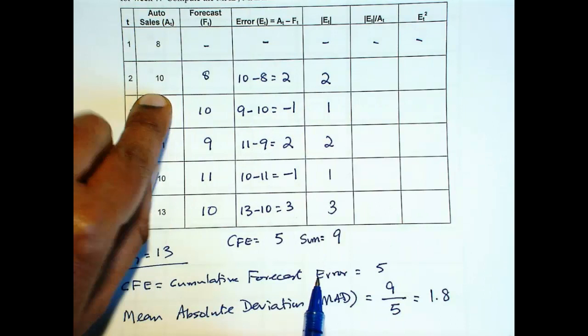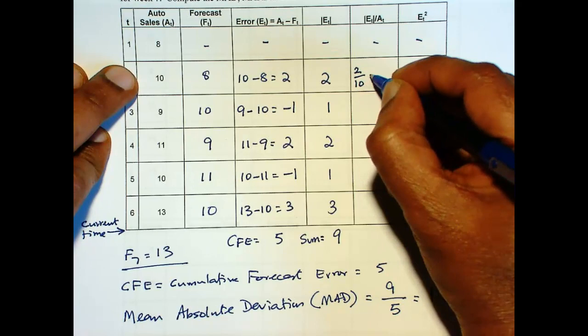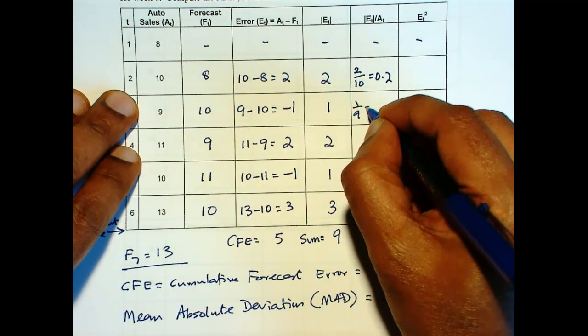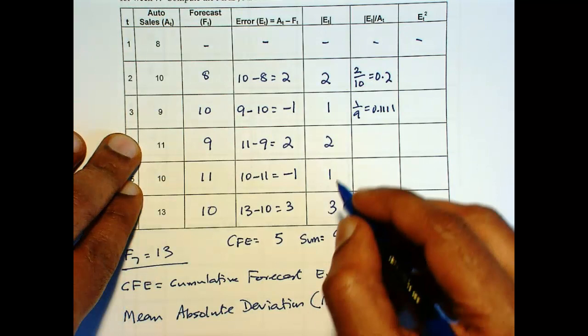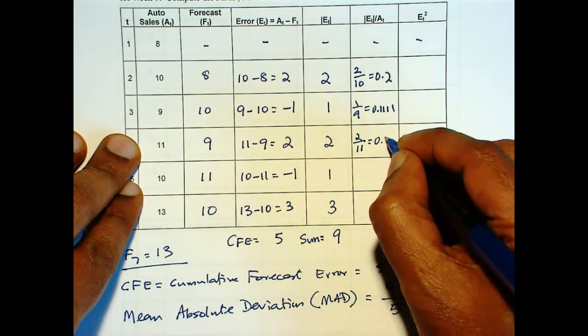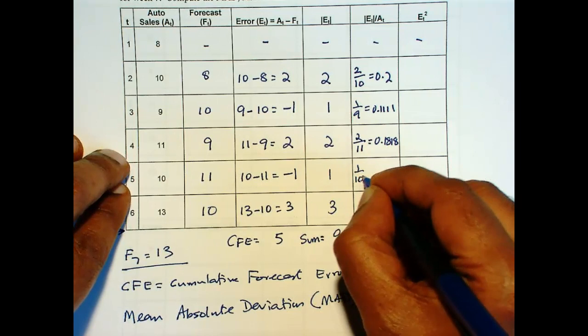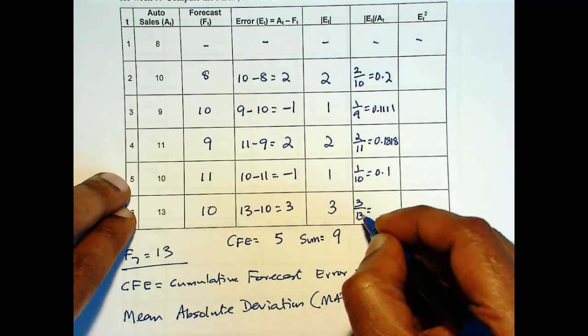1 over 9 is 0.1111. And then 2 over 11 is 0.1818. And then 1 over 10 is 0.1. 3 over 13 is 0.2308. And the sum here is 0.8237.